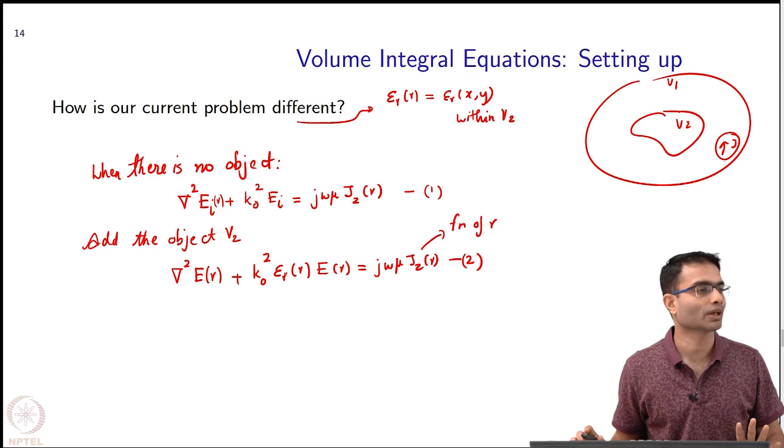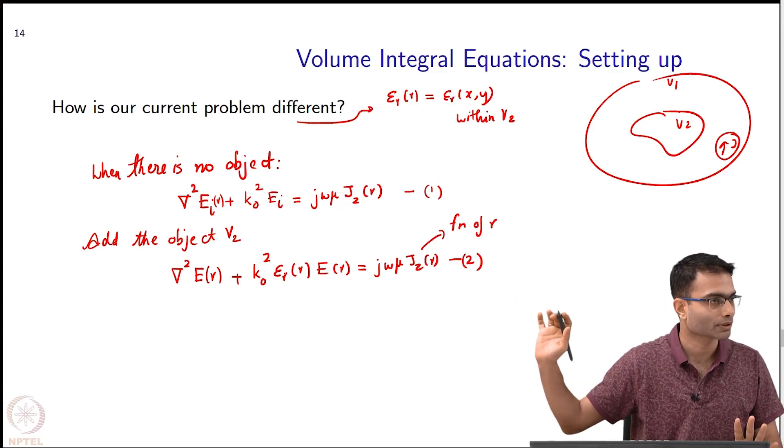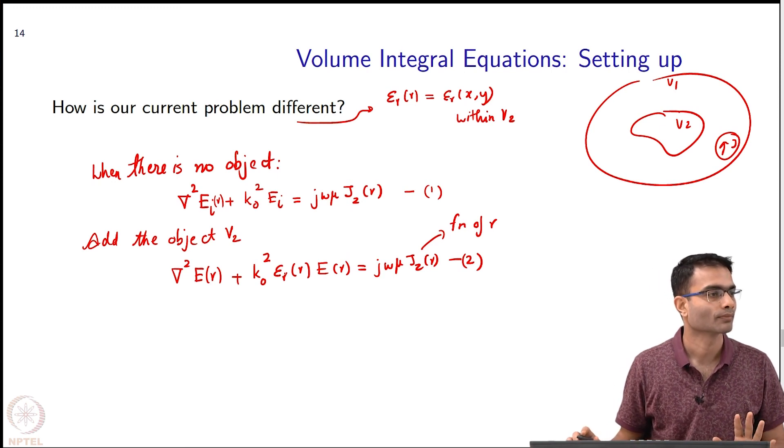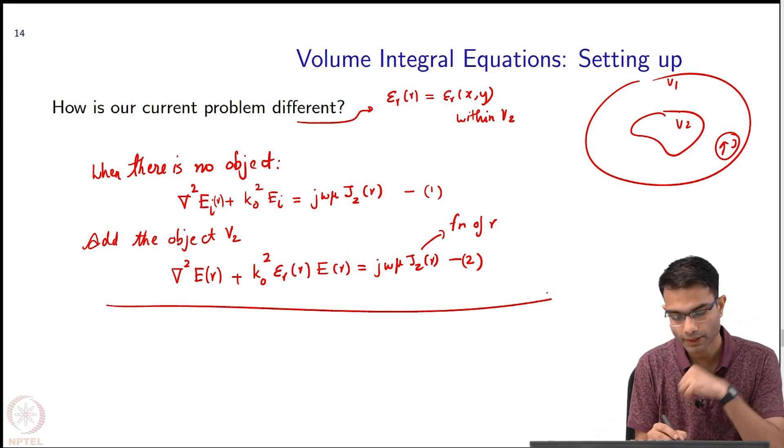Typically I do not know the current source and I do not want to get into the details of how the current is flowing in some antenna somewhere. What can I do with these 2 equations to get rid of current source? Subtract.